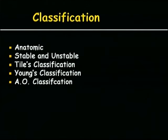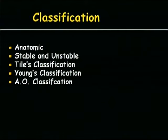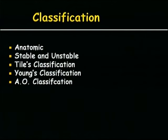Coming to classification, we have an anatomic classification based on the bone or joint involved, followed by assessment of whether the fracture is stable or unstable. The main classification systems are Tile's, Young's, and AO. The most commonly used is Young's, followed by Tile's and then AO.